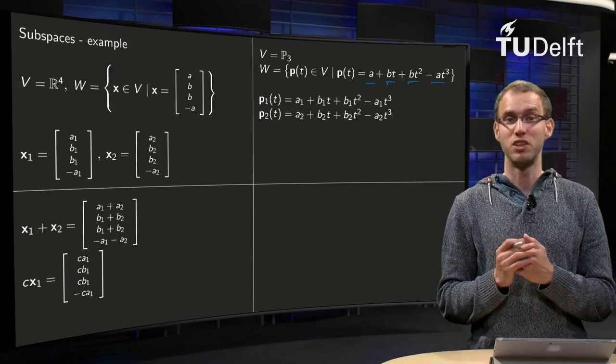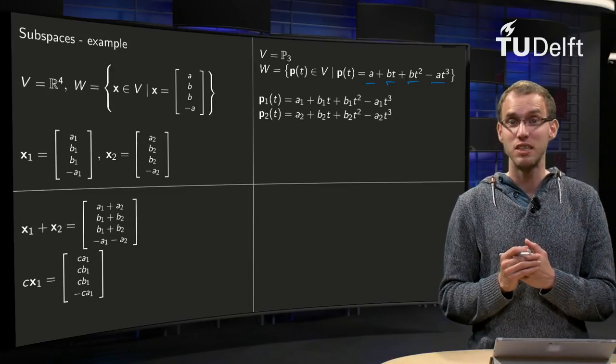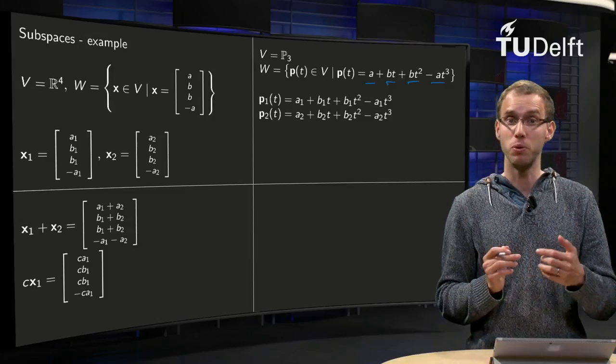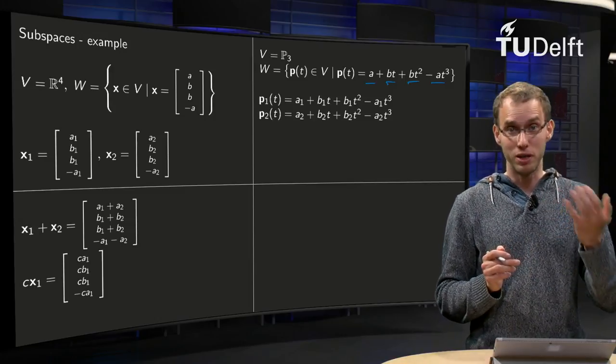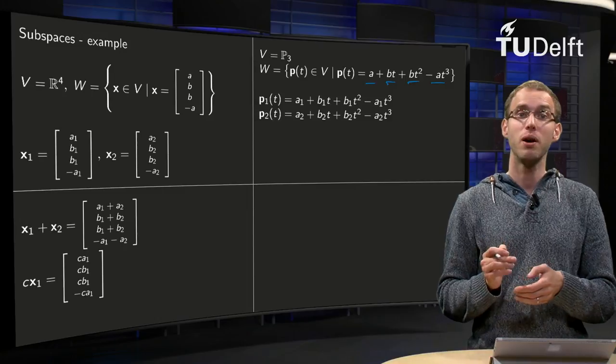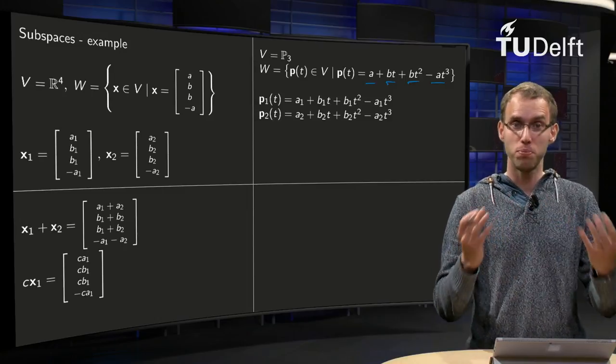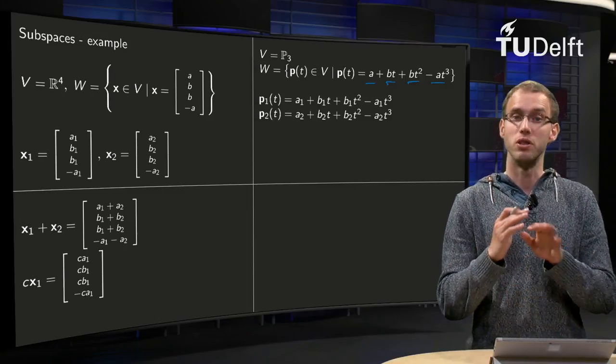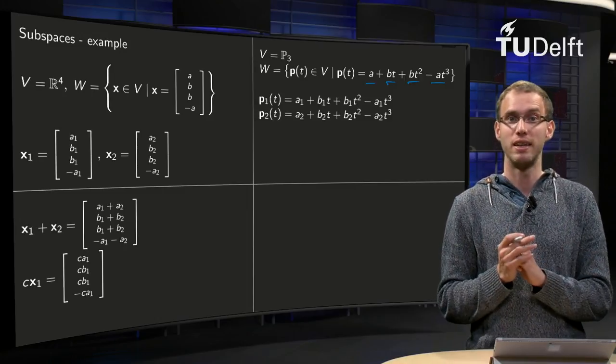First, is the zero function inside W? Well, you can choose A and B equal to zero, then you get the zero polynomial, so the zero is fine.